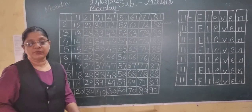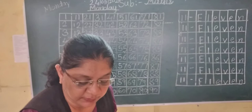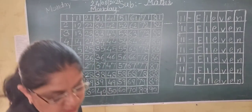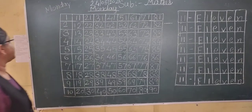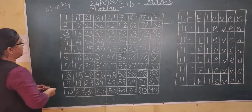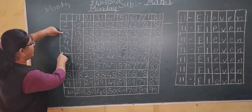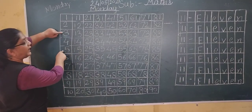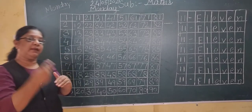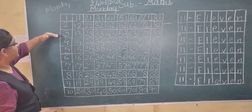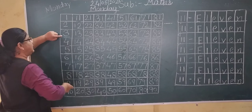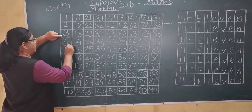Okay, students, today we will see the between numbers. See here, students — three and four. Which number will come between three and four? Between means the middle number. Between three and four, which number will come? Yes — four.